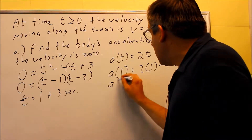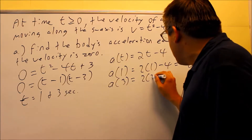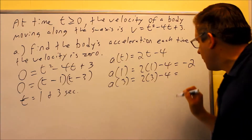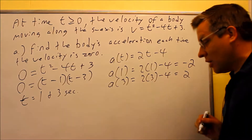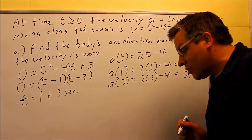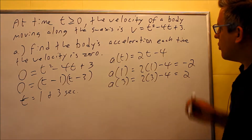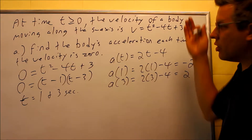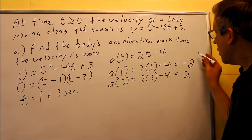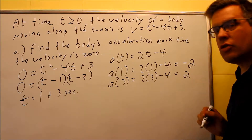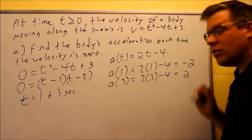a(1) gives us negative 2. Then I'm going to find a(3): 6 minus 4 is going to be positive 2. So those are our answers. There are no units given, so I don't need to include any units. These are the two answers: negative 2 and 2.